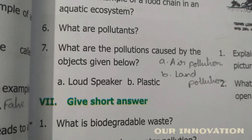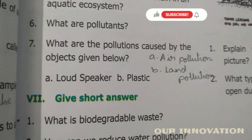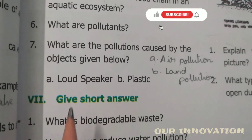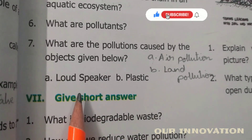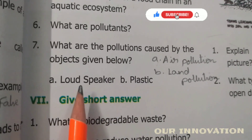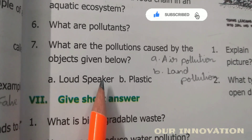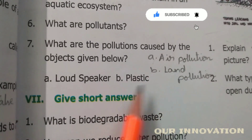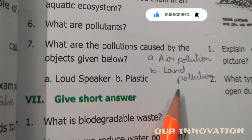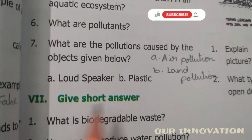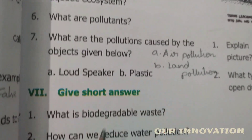Seventh question: what pollution is caused by the objects given below? Loudspeaker causes noise pollution. Due to plastic, it causes land pollution. So the answers are noise pollution and land pollution.